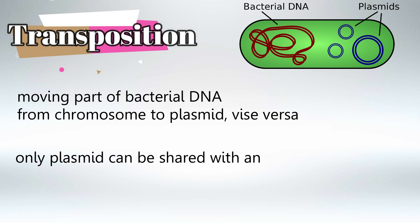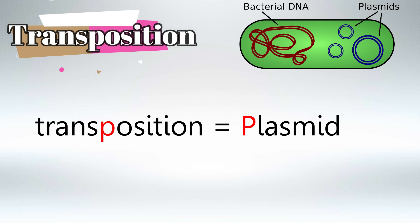Keep in mind that if the bacteria want to share its DNA with another bacteria, it can only share its plasmid, not the chromosomes. So the plasmid is smaller and readily accessible. Just remember that transposition has to do with plasmid.